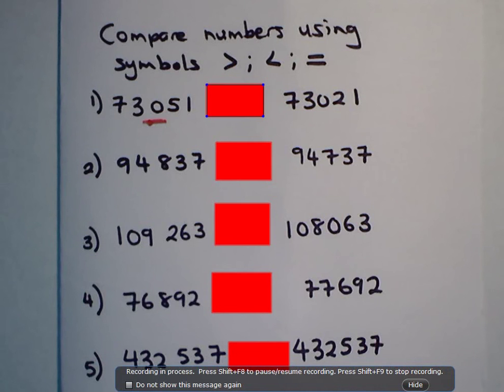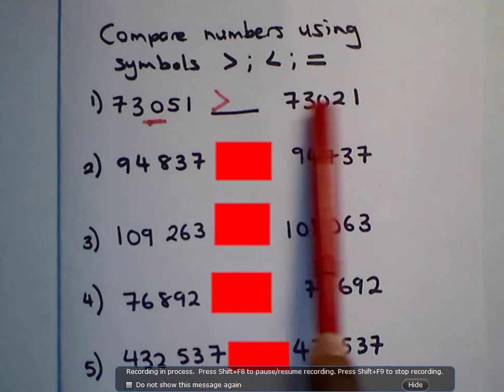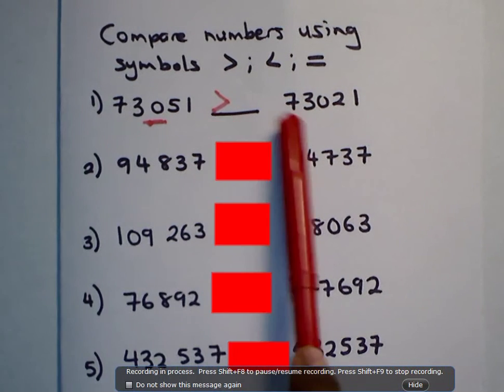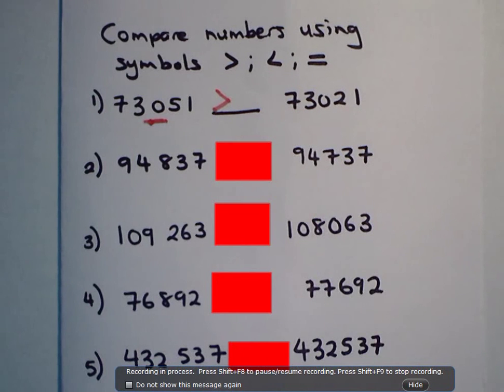So, therefore, that one there will have a greater than sign. So, if you had to read it from left-hand side to right-hand side, it would be 73051 is greater than 73021. Right? I want you to do the rest of them yourself. I'm giving you 10 seconds.